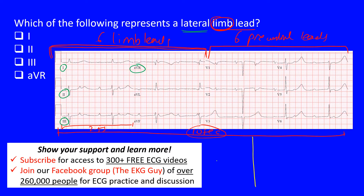In the quadrant system, lead one sits on the left, AVL is up here, lead two and AVF are down below, and then lead three and AVR complete the limb leads. If we place the heart in the middle of this quadrant diagram, we can identify which leads correspond to which regions.